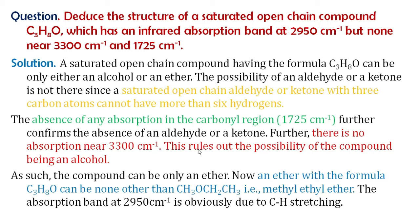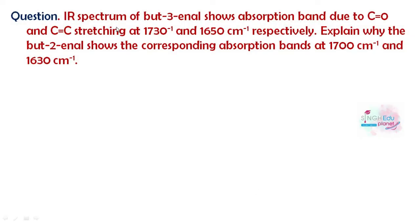This was a very important question that has appeared in many exams, and it can be solved in three logical steps. The next question is: the IR spectrum of but-3-enal shows absorption bands due to C=O and C=C stretching at 1730 and 1650 cm⁻¹. But-2-enal shows absorption bands at 1700 cm⁻¹ and 1630 cm⁻¹ — both values are lower.